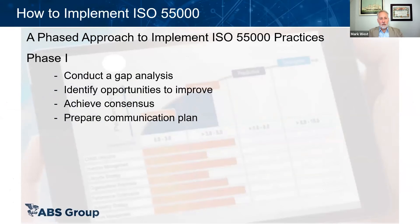We do it in a phased approach. In phase one, we do a gap analysis — either a simple ISO 55000 compliance checklist, or a more granular bottoms-up approach asking whether our CMMS is capable of supporting what we're trying to do, are we populating data, are work management processes in place. From that we identify where we're going to improve and reach consensus among stakeholders. An important part of phase one is also developing a communication plan — part of change management for an organization is communicating what you're trying to do and why.